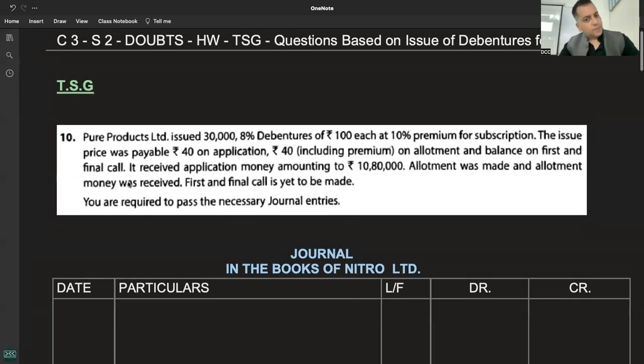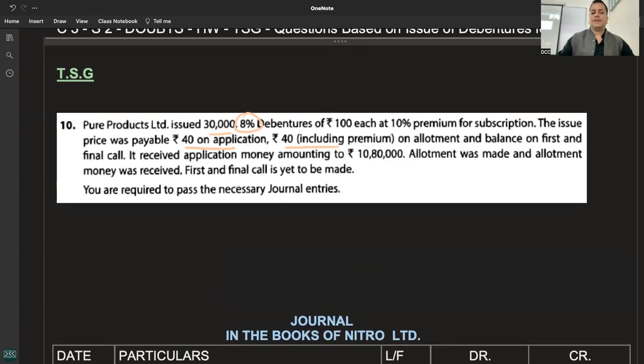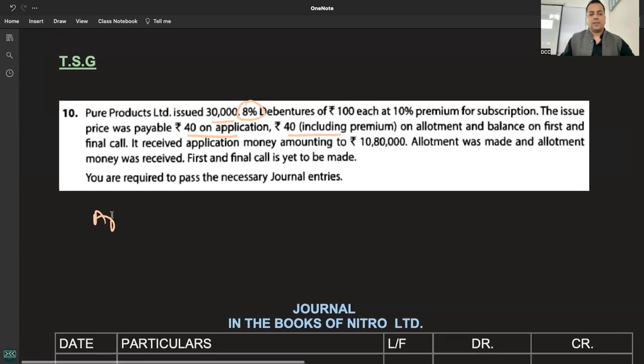Number 10: Pure Products Limited issued 30,000 8% debentures of 100 rupees each at 10% premium. The issue price was payable: 40 on application including premium, and the balance on allotment. First and final call is 30 rupees.